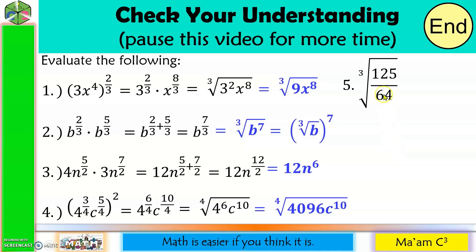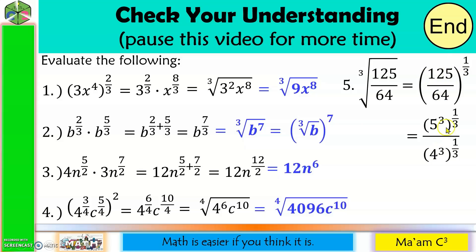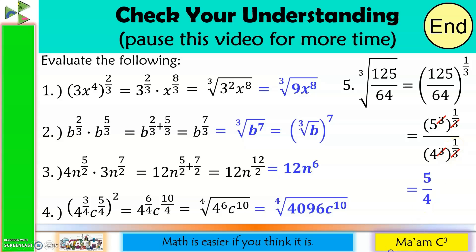Number 5: we have the cube root of 125 over 64. Converting to exponential form, I express 125 as 5 cubed and 64 as 4 cubed. The 3s cancel in both numerator and denominator, giving 5 raised to the 1st power over 4 raised to the 1st power, which is 5 over 4. So the final answer is 5 over 4.